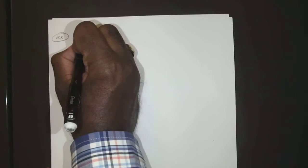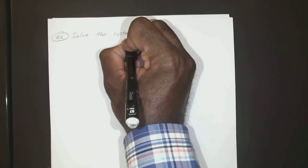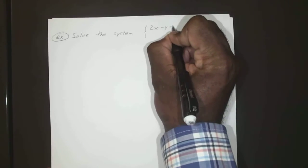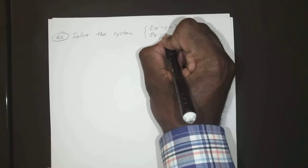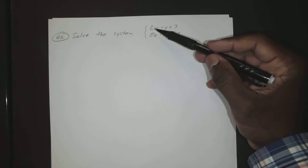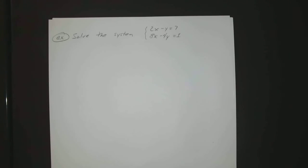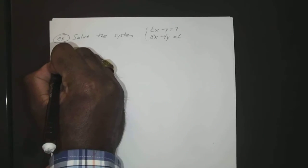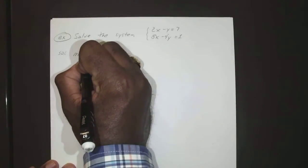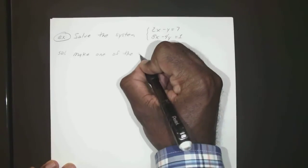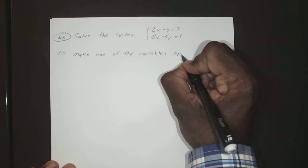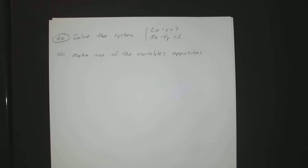Okay, so what if you want to solve the system 2x - y = 7 and 8x - 4y = 1? Okay, so the first thing we want to do is we want to make sure at least one of those variables have opposite coefficients. So make one of the variables opposites.